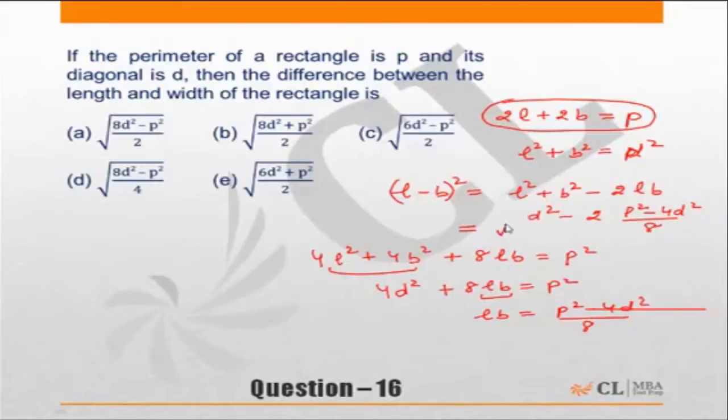And the square root of that will give me L minus B. So I can say here L minus B is equal to 4D square minus P square plus 4D square by 4 under root.